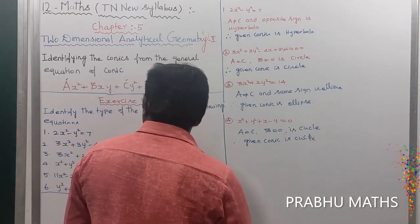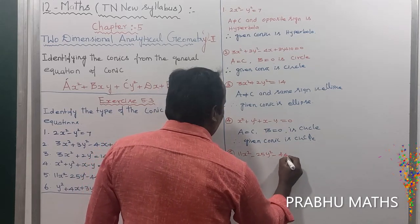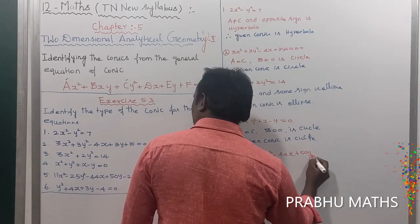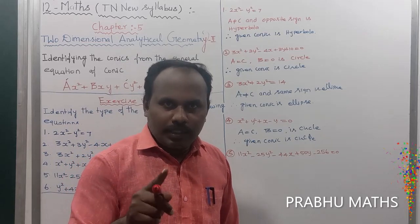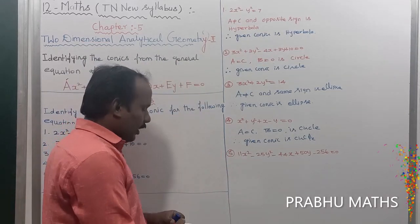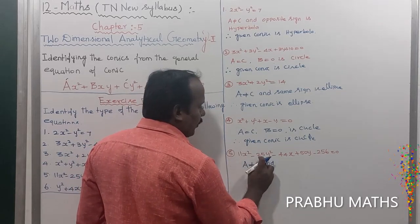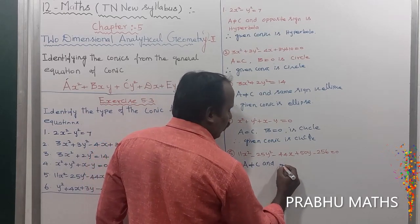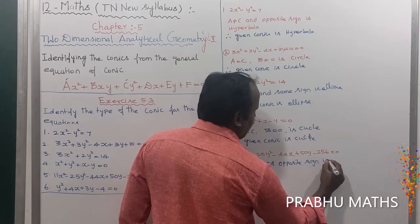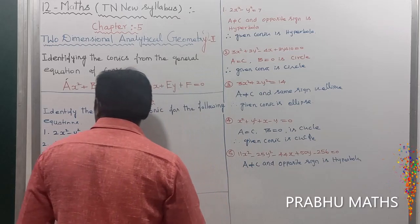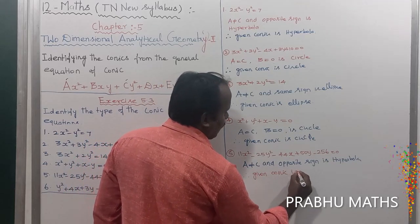Fifth problem: 11x² - 25y² - 44x + 50y - 256 = 0. The coefficient of x² is a and the coefficient of y² is c. These are not equal, so a is not equal to c. Also, x² is positive and y² is negative — opposite signs. Opposite sign means this is a hyperbola. Therefore, the given conic section is a hyperbola.